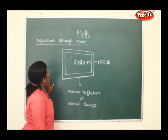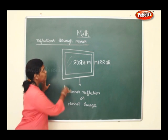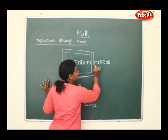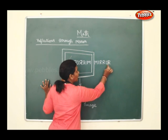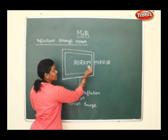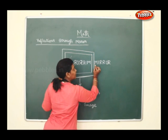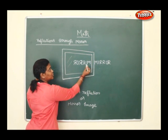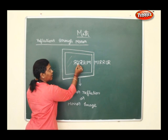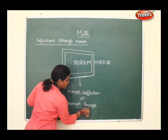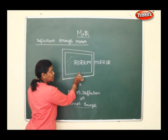Now we shall see reflections through a mirror. Imagine this is a mirror and I have written the word 'mirror' here: M-I-R-R-O-R. If you place a mirror in front, beside the word 'mirror' I have written, you will find the mirror image here: M-I-R-R-O-R. This is called a mirror reflection or mirror image — the image you get on the mirror is called the mirror image.